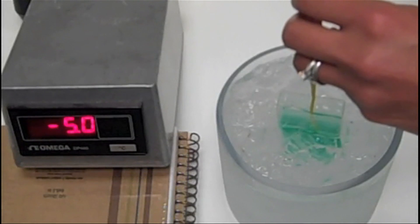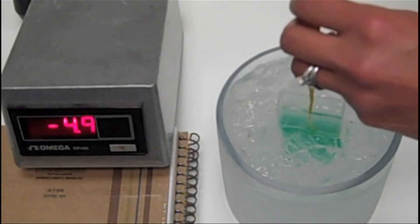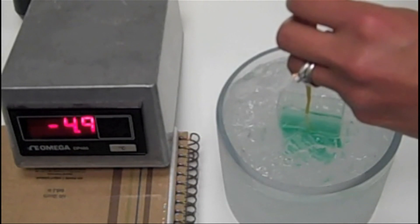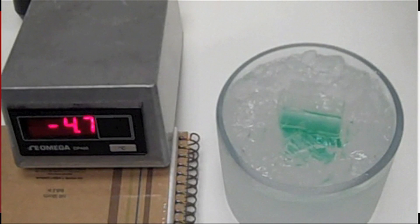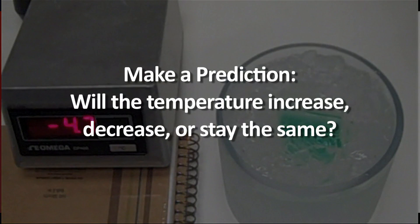The temperature reads about minus 5 degrees Celsius. The green water is still a liquid even though the temperature is below the normal freezing point of water. This is called supercooling. In the next step of this demo, we are going to add a couple of small pieces of ice to the green water. The supercooled water will crystallize rapidly with the addition of the ice. When this happens, what do you predict will happen to the temperature on the thermometer? Will it increase, decrease, or stay the same? What reasoning supports your prediction?